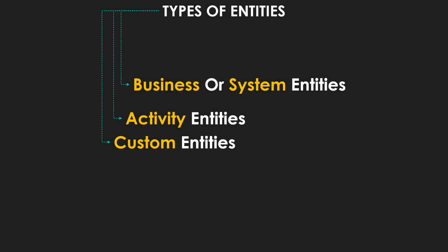There are three types of entities available in Dynamics 365: namely business or system entities, activity entities, and custom entities.